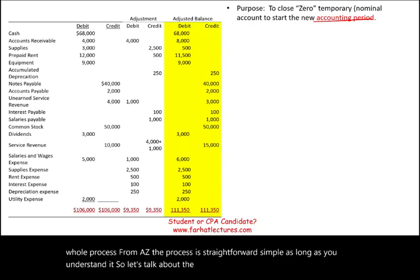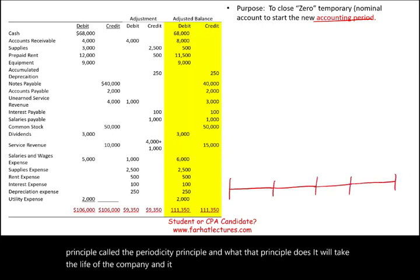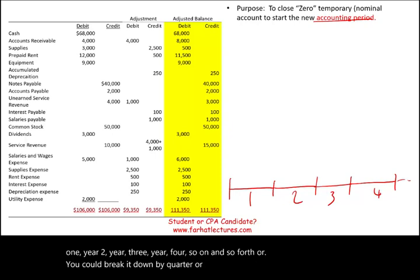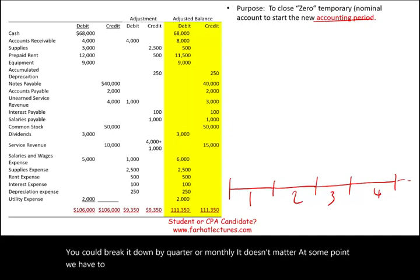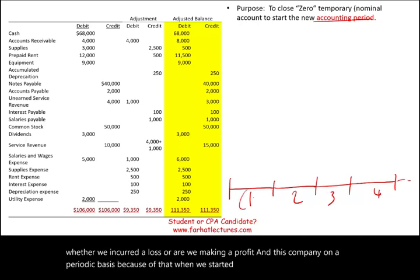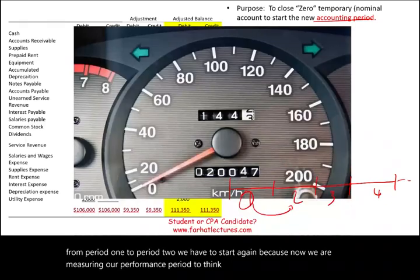Let's talk about the accounting period. We have a principle called the periodicity principle, which takes the life of the company and breaks it down into artificial periods — year one, year two, year three, and so on — or by quarter or monthly. At some point we have to stop and determine our profitability, whether we incurred a loss or are making a profit, on a periodic basis. When we go from period one to period two, we have to start again because now we are measuring performance in period two. Think of the closing process as an odometer in your car.